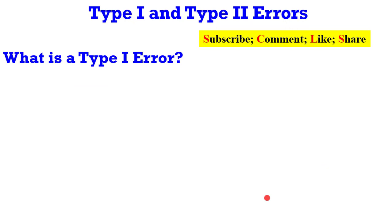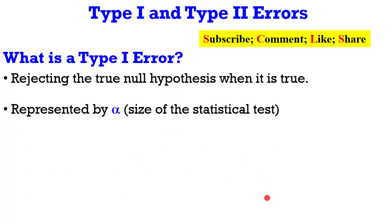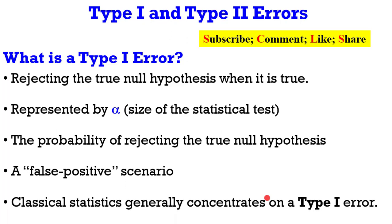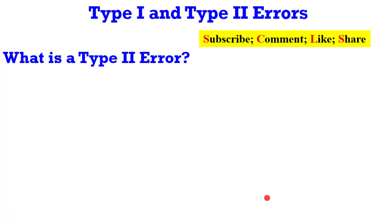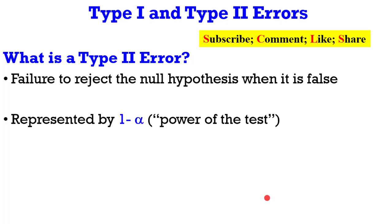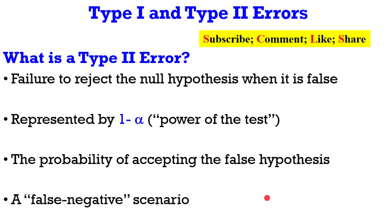Now let's dig further on type 1 error. It is when the true null hypothesis is rejected when it is true. It is represented by alpha, also called the size of the statistical test. It is the probability of rejecting the true null hypothesis, and it is also when a false positive scenario has occurred. Classical statistics generally concentrate on the type 1 error. For type 2 error, it is the failure to reject the null hypothesis when it is false. It is represented by 1 minus alpha, called the power of the test. It is the probability of accepting the false null hypothesis — a false negative scenario.